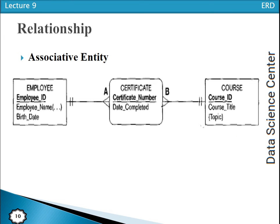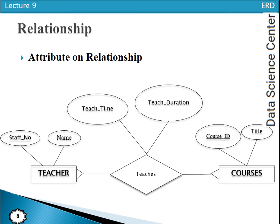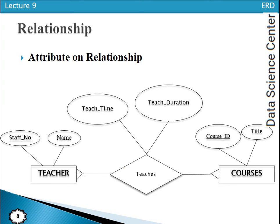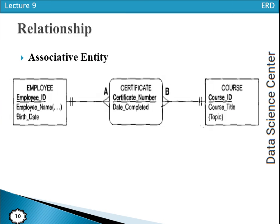Whenever we have attributes on relationships — such as 'date completed' — we use the concept of the associative entity type. We create a new entity type for it. In the ER diagram, regular entity types are represented with rectangles, but the associative entity type is represented with a rounded-corner rectangle. We assign a suitable name to it. The associative entity type itself represents the relationship, so no separate relationship name is shown — because the associative entity type is the relationship.